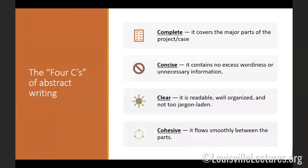The four C's of abstract writing — these are very important. An abstract should be complete, covering the major parts of a project or case. It should be concise, containing no excess wordiness or unnecessary information. It should be very clear and readable — your reader has to interpret what you're doing, so don't include too much medical jargon because you never know who your reviewer is. An abstract should also be cohesive and flow smoothly between the parts.